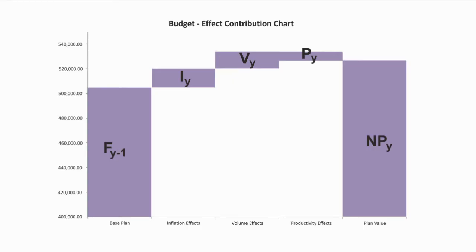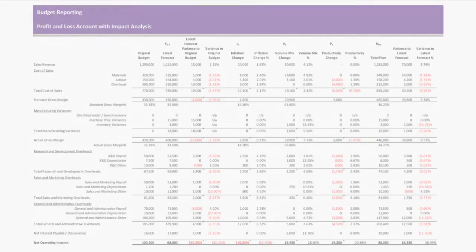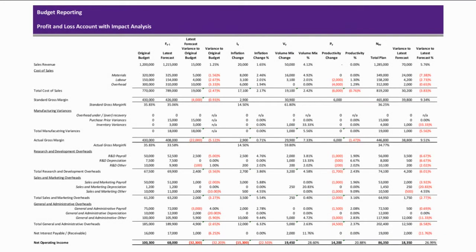We see a practical illustration of the formula on the waterfall chart of a typical cost centre department, showing the move from the current forecast F(Y-1), plus or minus all the movement of vectors of inflation, volume and productivity, to get to the new plan value. We can bring all the planning impact vectors for all the different elements of planning, such as cost centres, sales and margins, together into a profit and loss style statement.